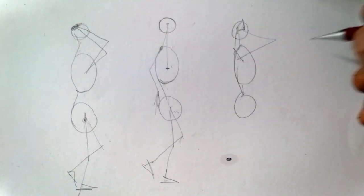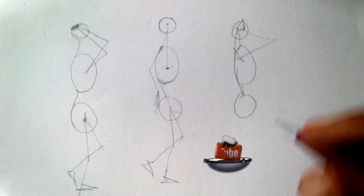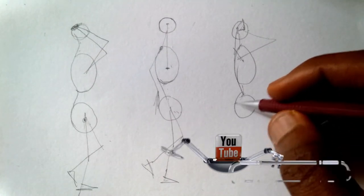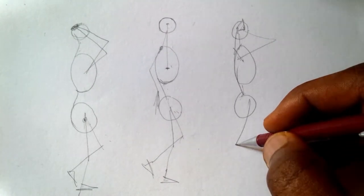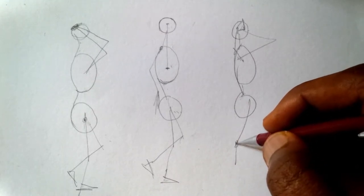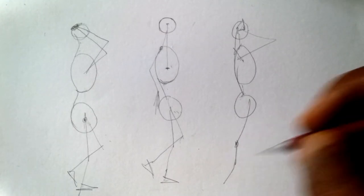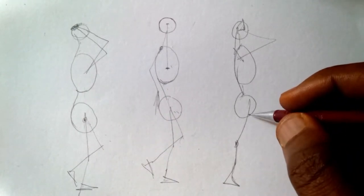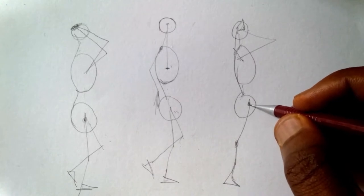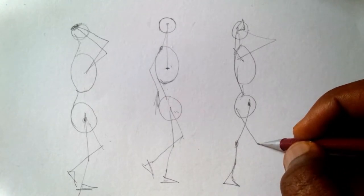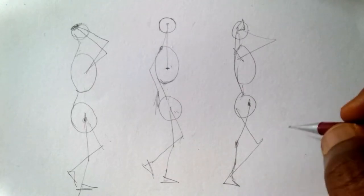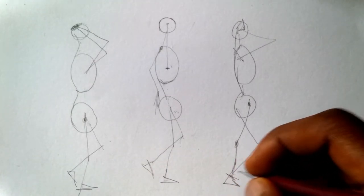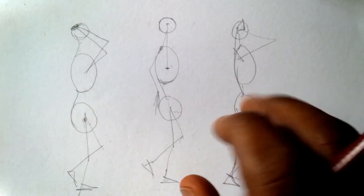These figures are in motion. Let's draw the leg and the foot. This particular body is in motion around the waist. Join the leg, that's good.